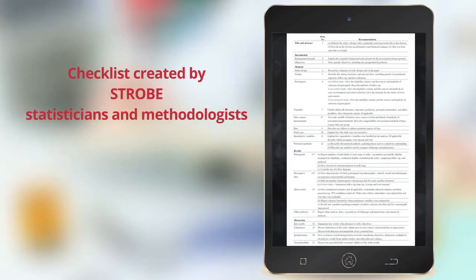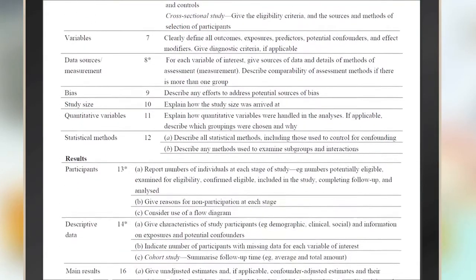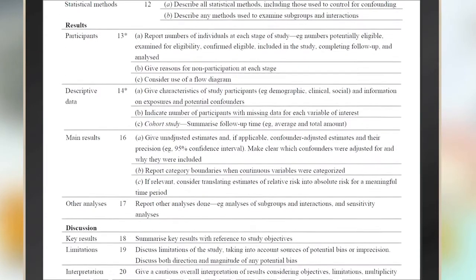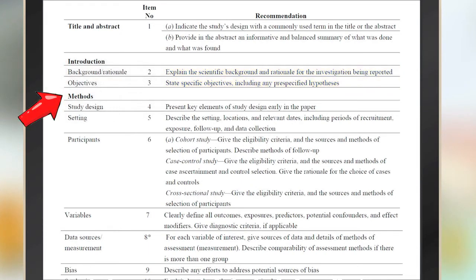The checklist we see here was created by Strobe, which is a collection of statisticians and other methodologists. This checklist covers the sections of a quantitatively oriented article, providing you with reminders of the content you should find there. For example, the introduction should clearly state the study's background and objectives, and the methods section should help you easily identify items related to study design and participants.